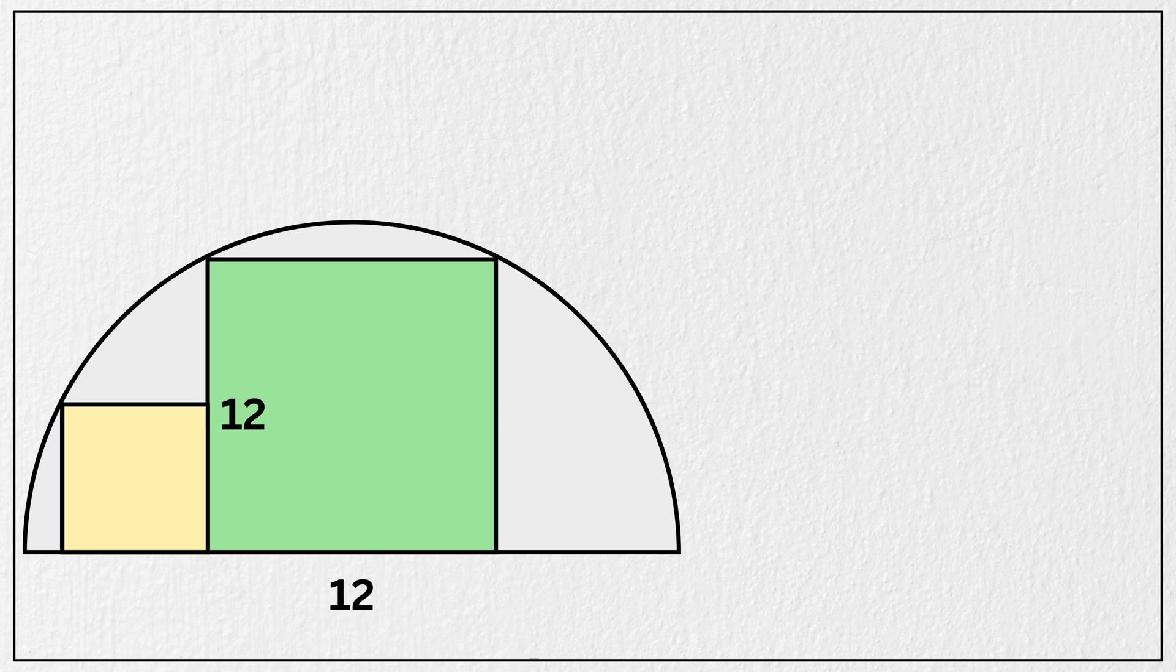Now let's assume that this marked point is the center of the semicircle. Since the square is 12 units wide, and the center lies directly at the midpoint of its base, that means this part is 6 units, and this other part is also 6 units. Now let's draw the radius from the center of the semicircle to the upper left corner of the large square, like this. Let's call this radius r.